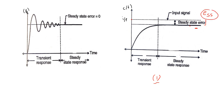The difference between desired output and actual output is the steady state error, denoted by ESS, which gives the accuracy of the system and indicates whether the system is stable or not.